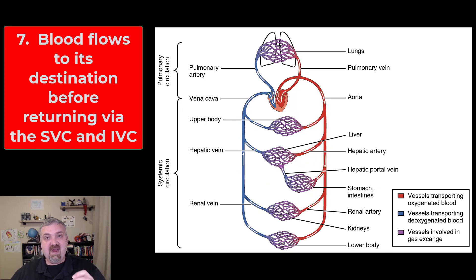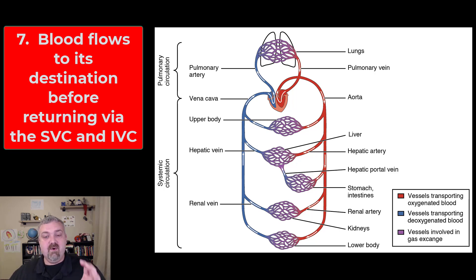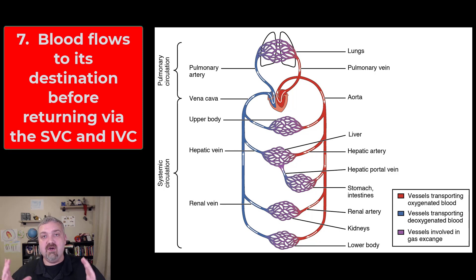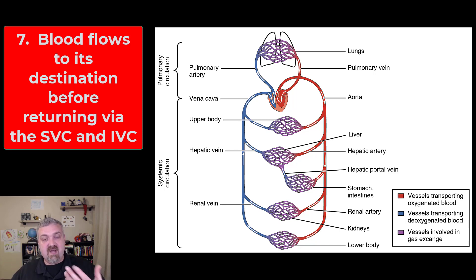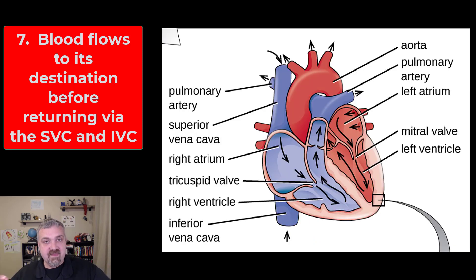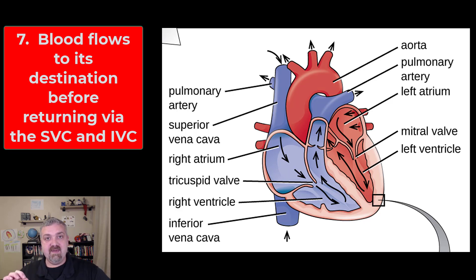The aorta is going to branch and carry blood everywhere else — everywhere but the lungs where it's dropping off CO2 and picking up oxygen. Blood travels through your arteries, branching into smaller arteries and then arterioles, reaching capillary beds where they drop off oxygen and pick up CO2. Then it's carried back to your heart, and we're back at the superior and inferior vena cava, and the whole cycle happens again.